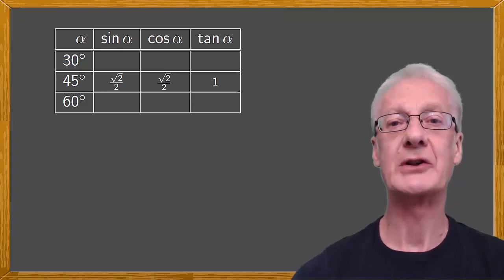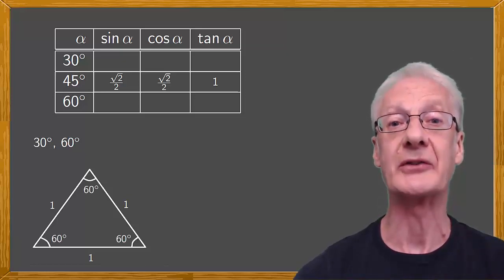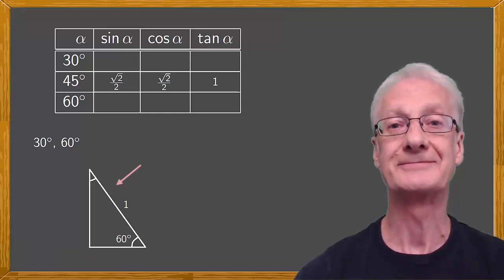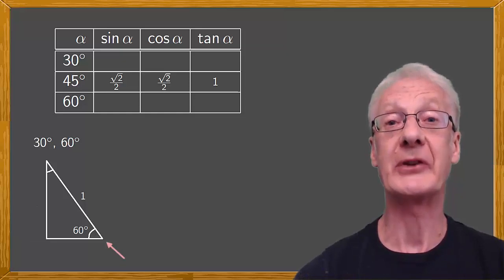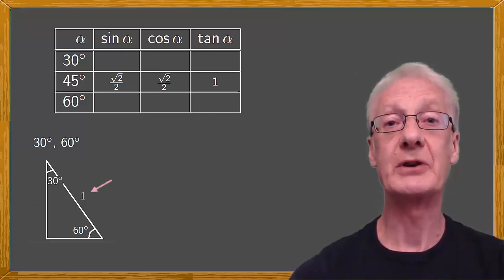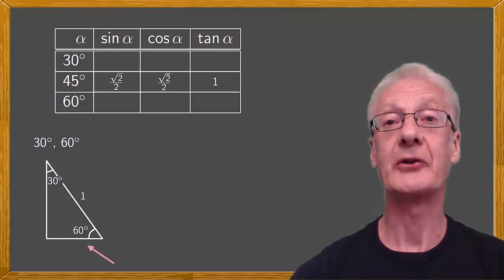Now let's calculate the value of the trig ratios for 30 degrees and 60 degrees. To do this, we'll draw an equilateral triangle of side 1. The angles are all equal, so because their sum is 180 degrees, each of them must be 60 degrees. We'll draw a line that bisects one of the angles to produce two right triangles. Let's focus on the one on the right. Notice that one of the angles is also an angle of the original triangle, and so must be 60 degrees. The other acute angle is half of this, and so must be 30 degrees. This side is from the original triangle and so has a length of 1, and this one is half the length of the original, and so must measure a half.